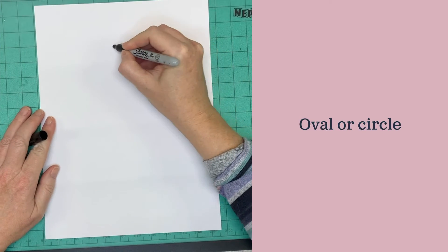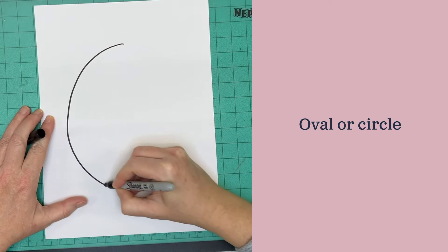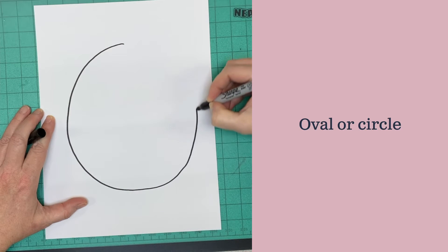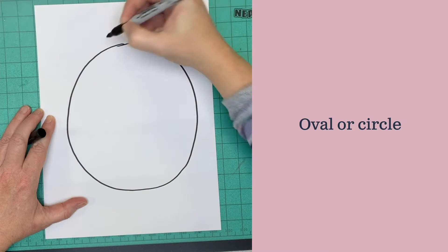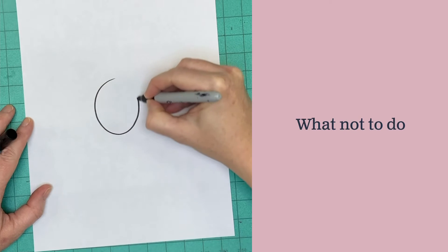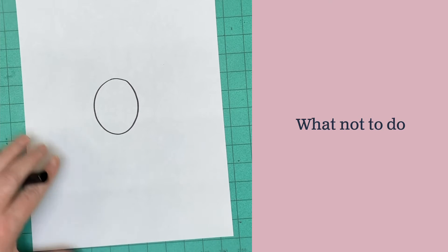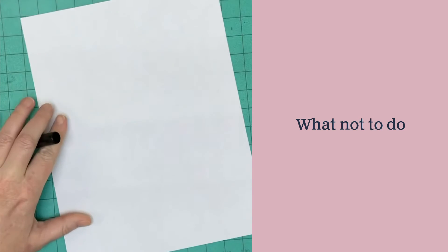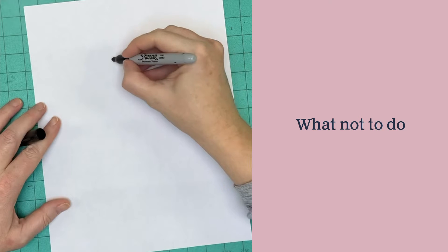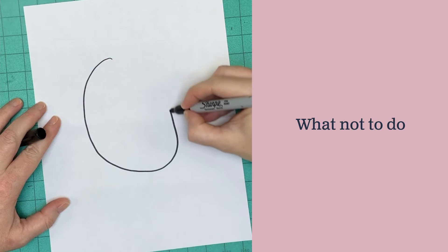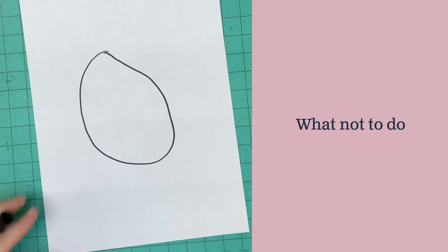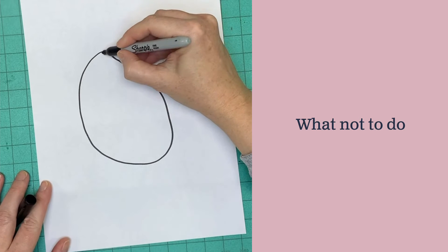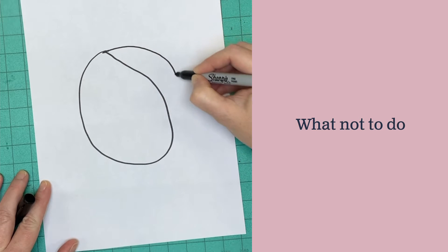Start by drawing the shape of your head. You can draw an oval or a circle. Don't make the circle or oval too small. We won't be able to fit anything inside of it. And if you make a mistake drawing your oval, go ahead and draw it the way you would want it, and then erase out the line that was a mistake.